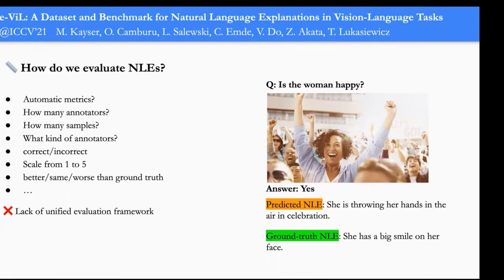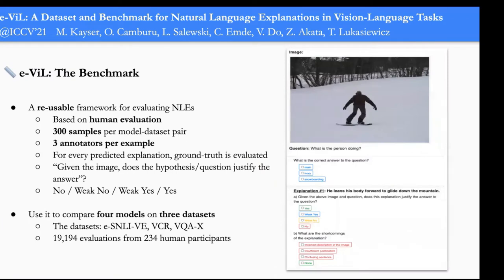For example, for the question 'is the woman happy?' answered 'yes,' one valid explanation is 'she's throwing her hands in the air in celebration,' while the ground truth says 'she has a big smile on her face.' These are not paraphrases, and BLEU or similar metrics would score the predicted explanation poorly despite it being very good. The benchmark uses human evaluation as the reliable standard.